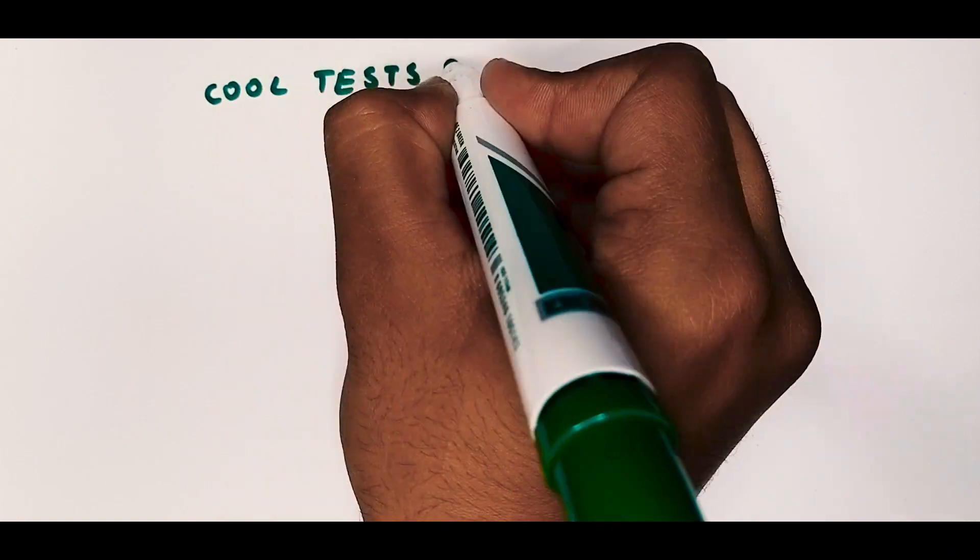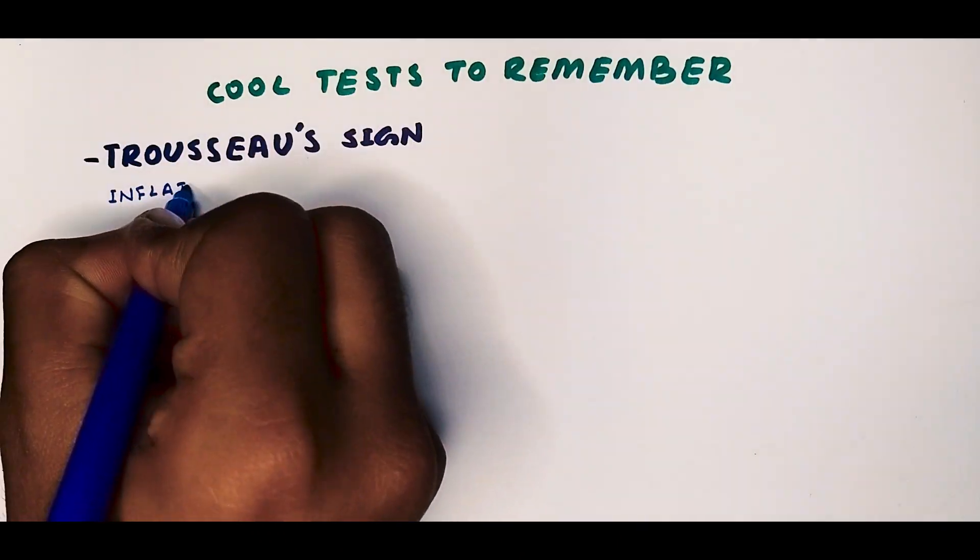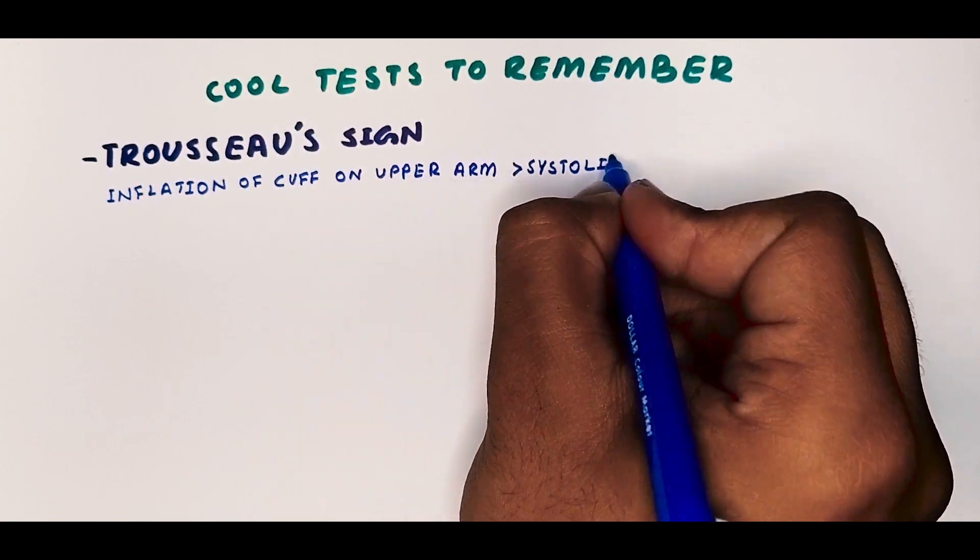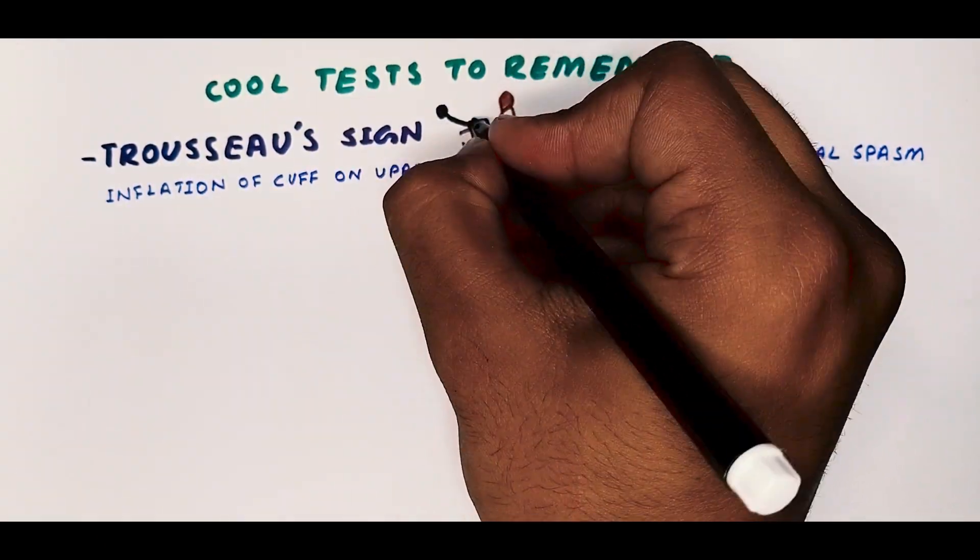And signs that will help you with the diagnosis of hypocalcemia are Trousseau's sign, where inflation of the cuff on the upper arm more than the systolic pressure for more than three minutes would result in a carpal spasm.